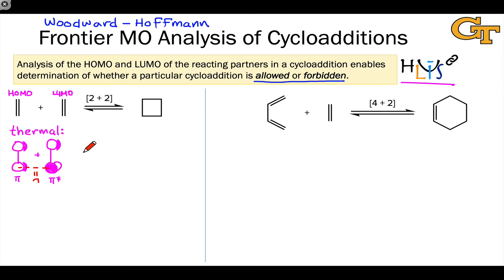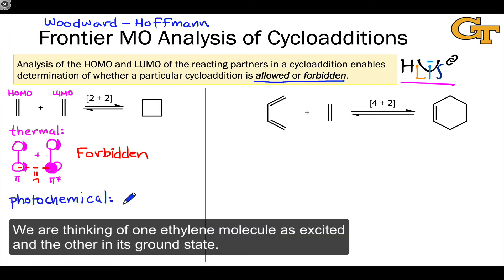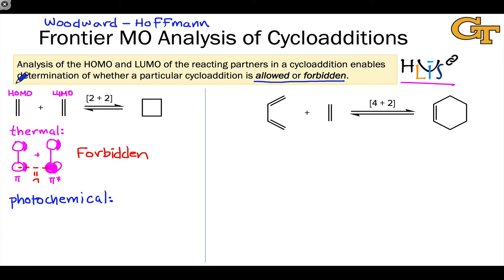This allows us to conclude that the thermal 2+2 cycloaddition is forbidden. For the photochemical case, the situation changes dramatically. With photoexcitation, the former HOMO has become a LUMO since a hole has opened up in the former HOMO, and the former LUMO has become a HOMO. So in the photochemical analysis, we don't look at the HOMO and LUMO — we look at either the HOMO and HOMO, or the LUMO and LUMO.